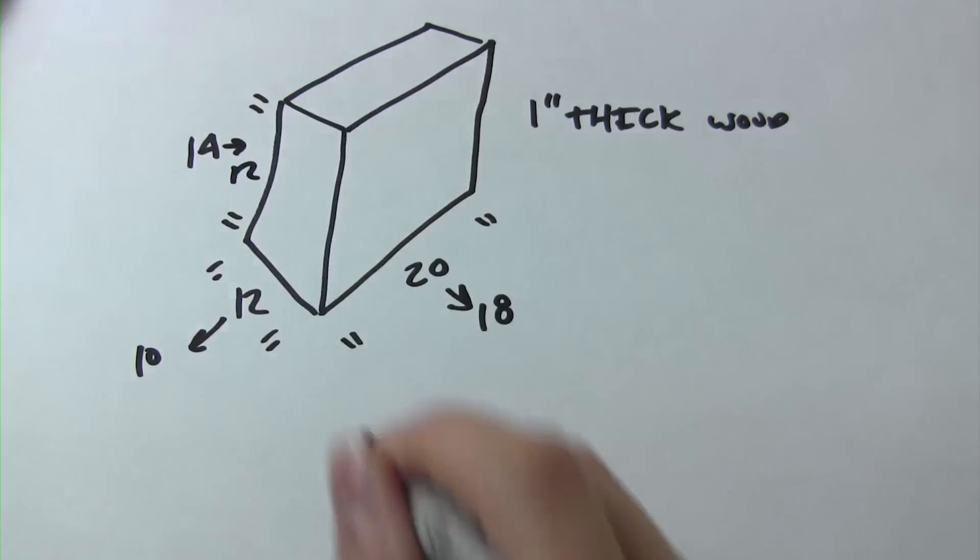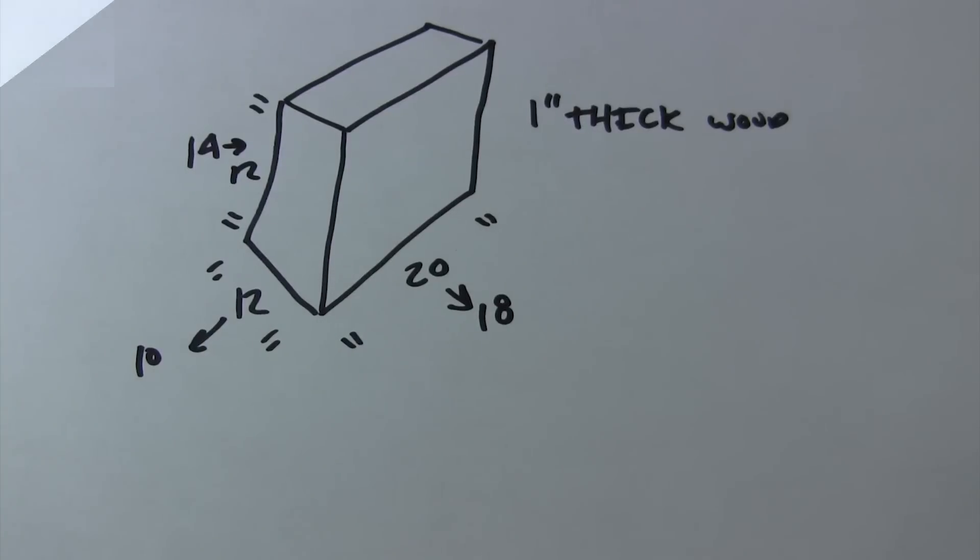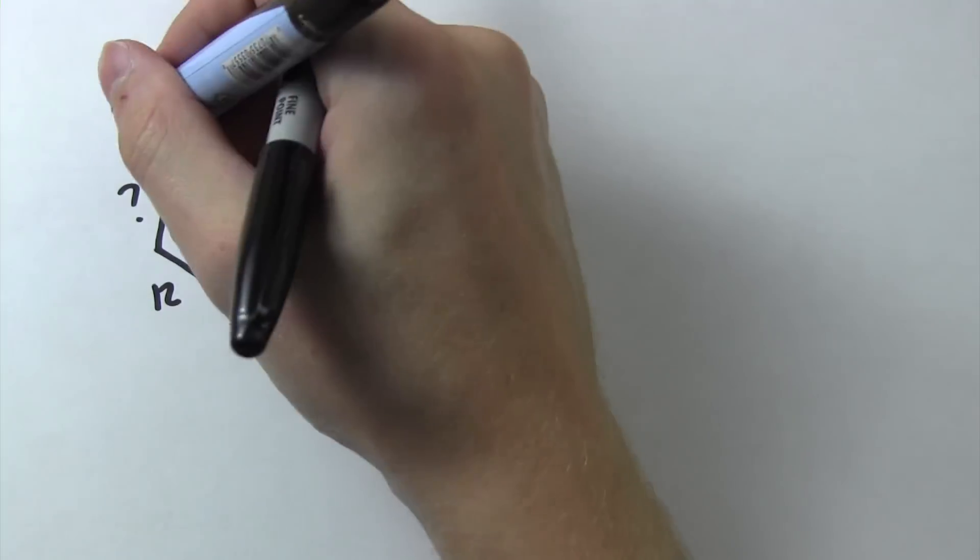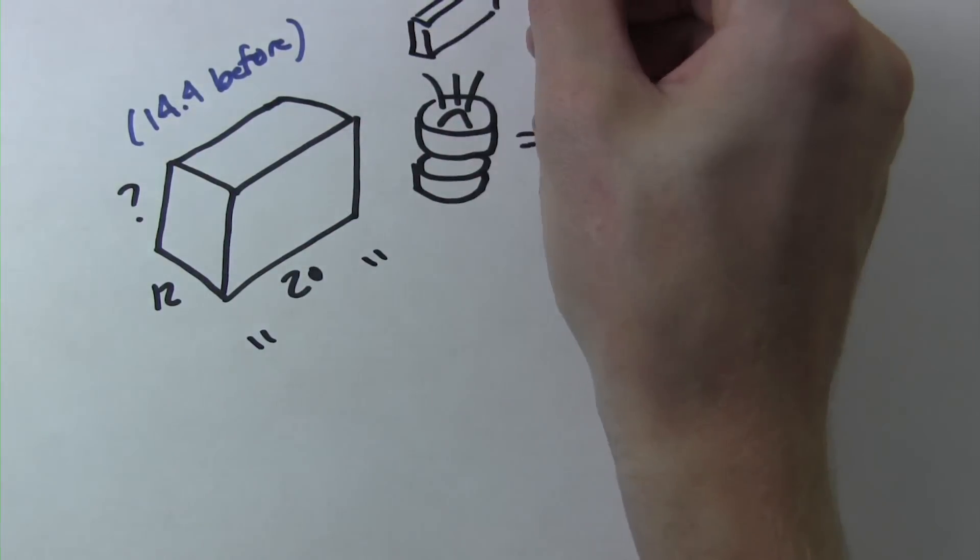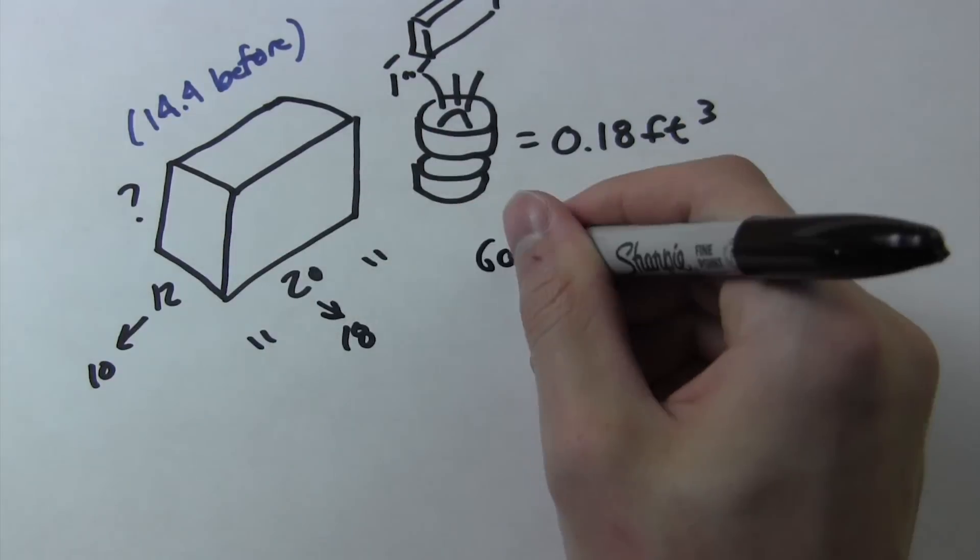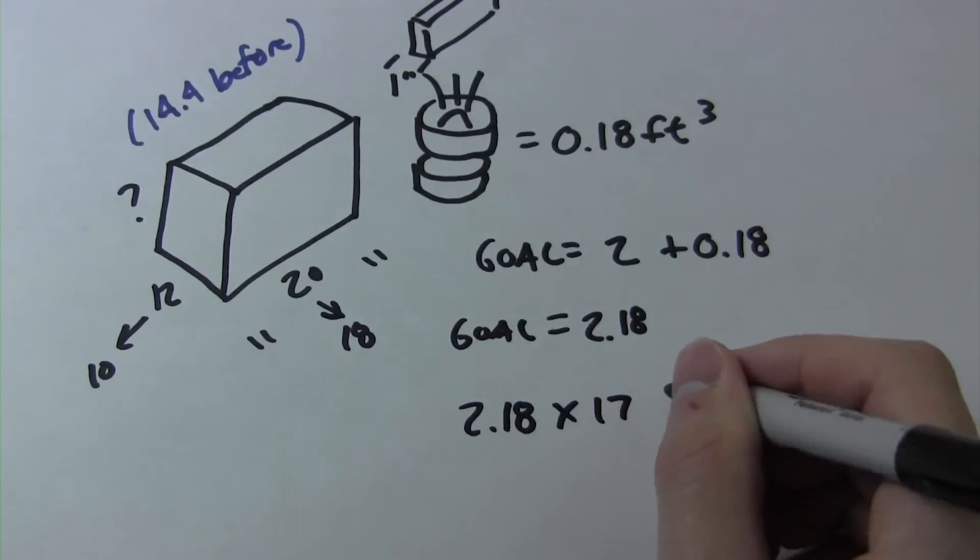These values are then used to determine the volume of the box. So let's go back to our original example, factor in the displacement of the subwoofer, and also factor in the thickness of the wood, and we find that we come up with a much different answer than the 14.4 before.